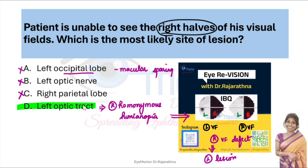He is not able to see the right halves as shown in the picture — exactly a right hemianopia. But this image was not given, so we had to deal only with the worded options.